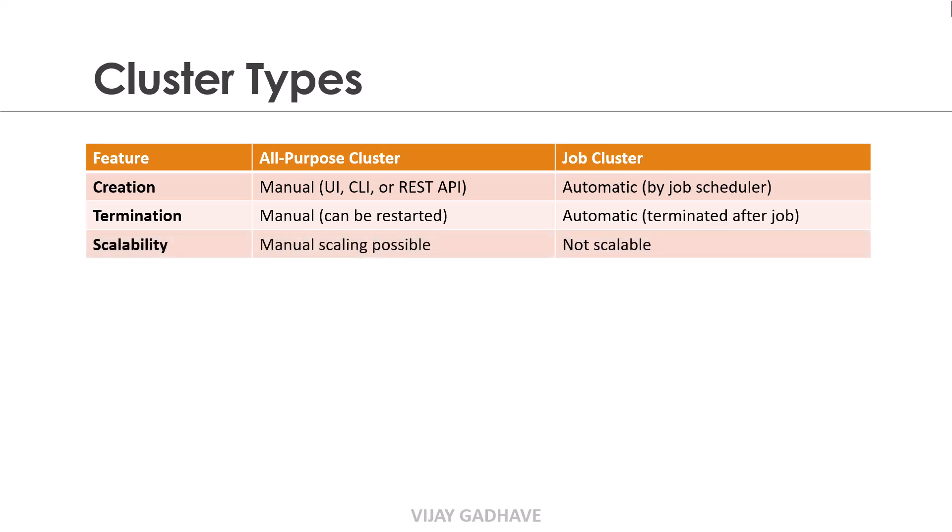The next feature is Scalability. In the All-Purpose Cluster, manual scaling is possible — users can add or remove resources to adjust the cluster size based on workload needs. Whereas the Job Cluster is not scalable; resources are predefined for the duration of the job, and scaling must be done in advance if required.